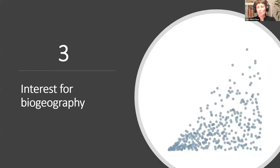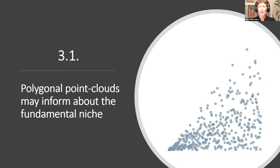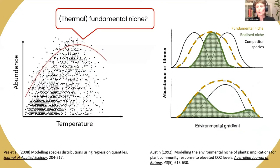Most important, is this interesting for biogeography? The first point is that polygonal point clouds may inform about the fundamental needs of the species. We know there are some locations where the realized niche of the species does not match with the fundamental niche because there are competitor species that constrain them. But there may be locations where these two niches match.